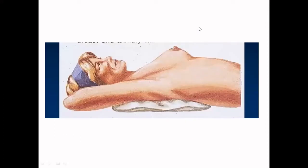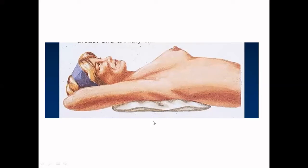For positioning in sonomammography, the patient is in supine position on the examination table. The breast to be examined should be elevated slightly with a wedge-shaped support so it doesn't fall to the side. A pillow is placed under the shoulder; the arm is extended and abducted over the head. Most importantly, ensure the part is adequately exposed including the axilla, which is necessary to avoid missing any pathology.